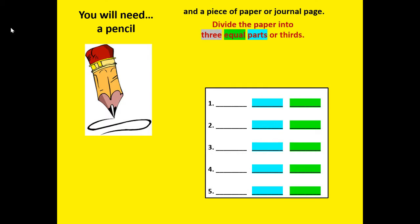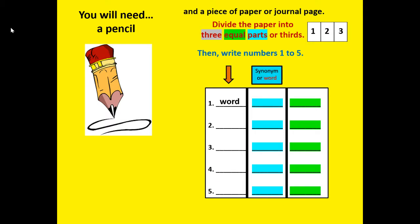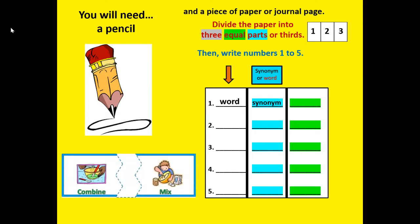You're going to divide your paper into three equal parts or thirds. You can draw two lines like the ones I've just showed you. Then you're going to write your numbers 1 to 5, because for each number you're going to write a vocabulary word or phrase. After you write the word, write a synonym — a word that means the same. For example, combine is a synonym for mix. If you don't catch the synonym, you can just write the word a second time in that second column.